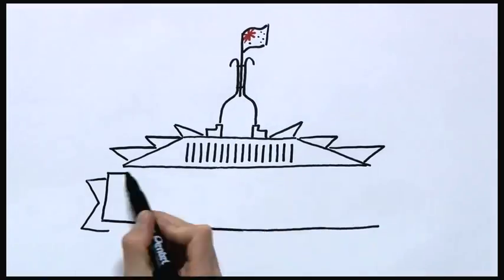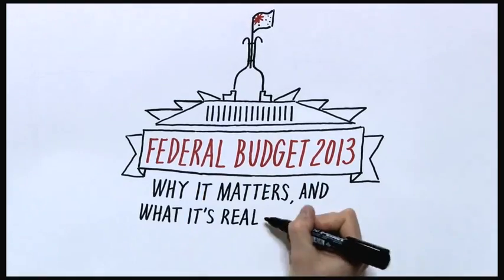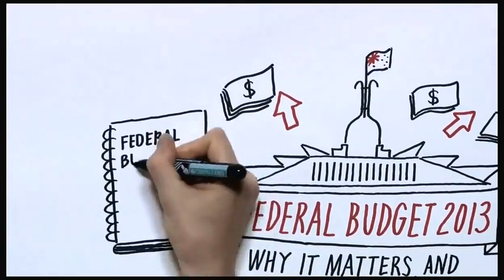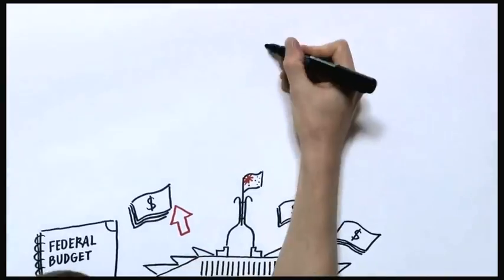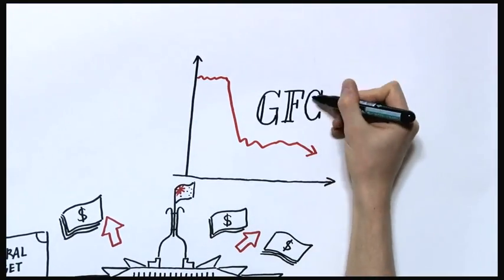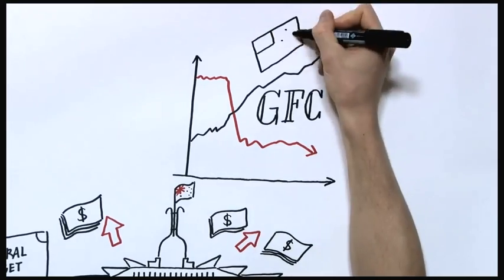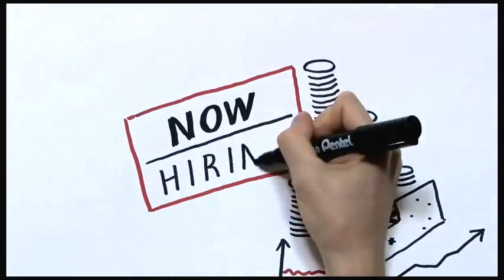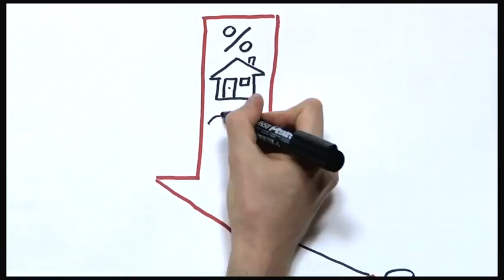Every year, the Australian Government plans how it will invest and prioritize money over the next four years. In the past five years, Australia has come through the global financial crisis and ongoing global turmoil better than almost every other developed country. Our economy is strong, jobs are growing, inflation, debt, and interest rates are low.